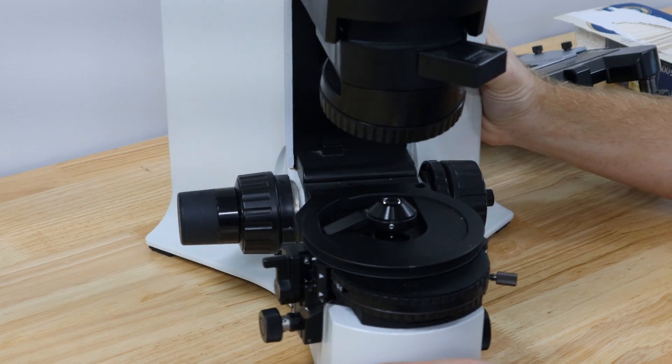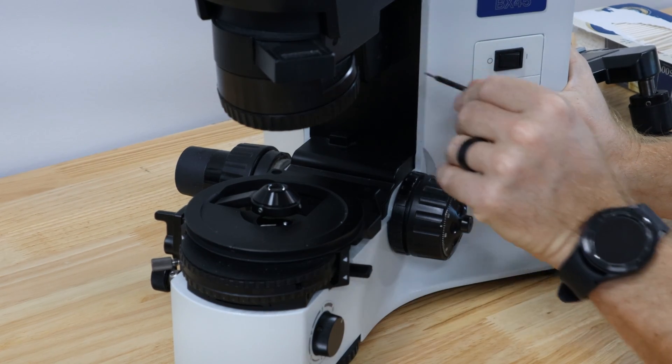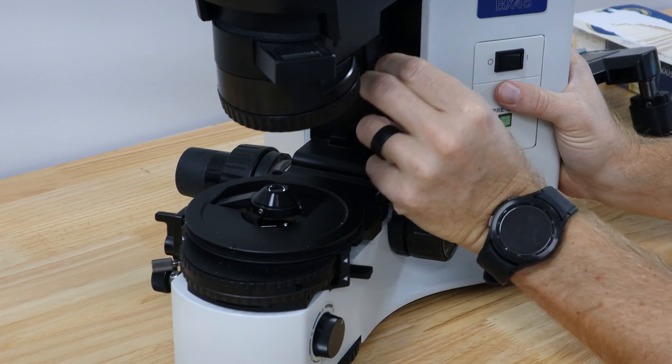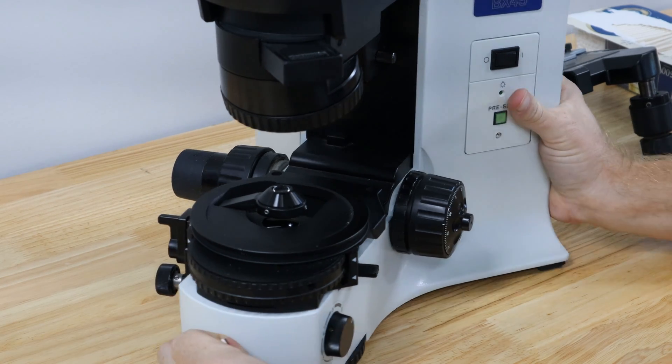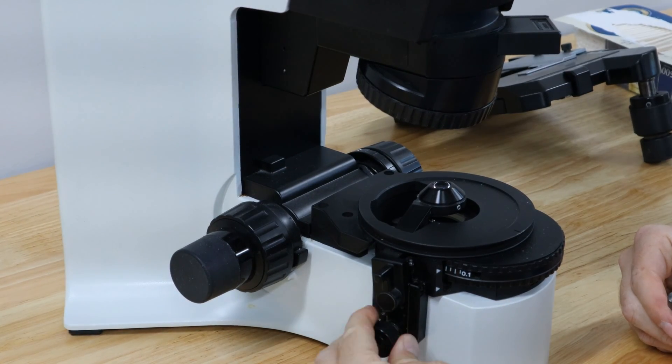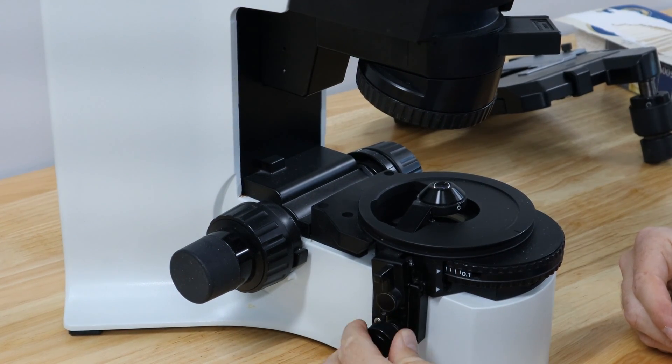But a lot of folks don't know these are there so we just wanted to show how to get these pins out and how to set Kohler on the BX 45 to move the condenser up and down. You're going to use this knob right here. That's going to move the top element of the condenser.